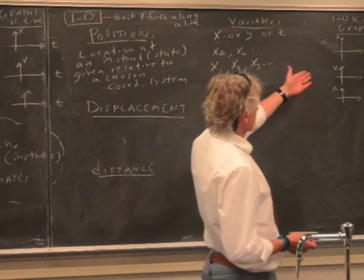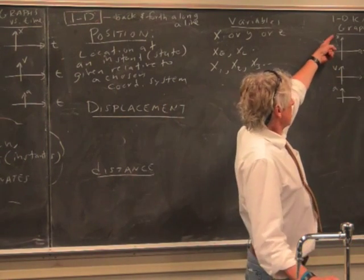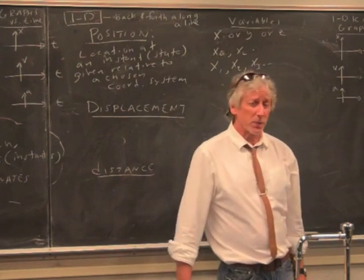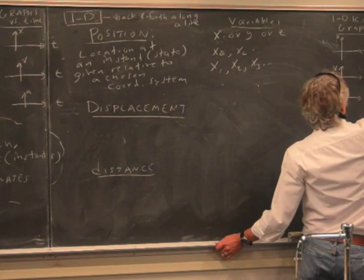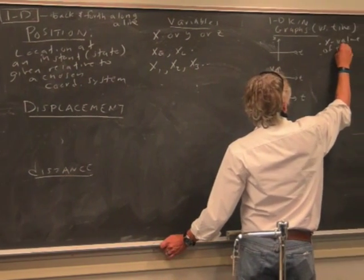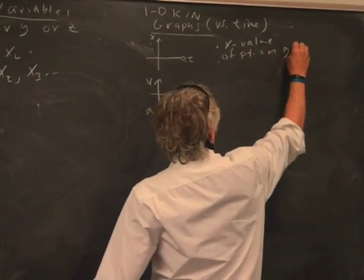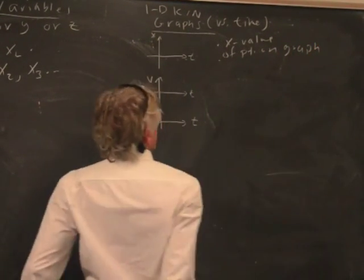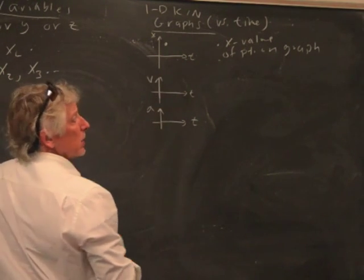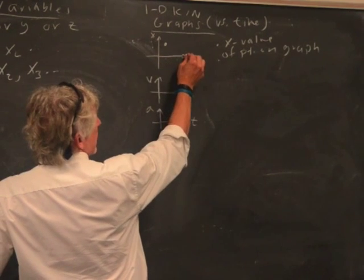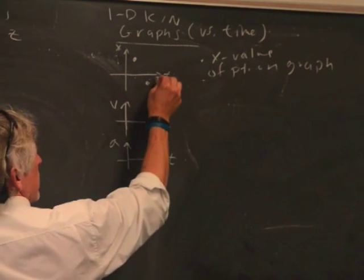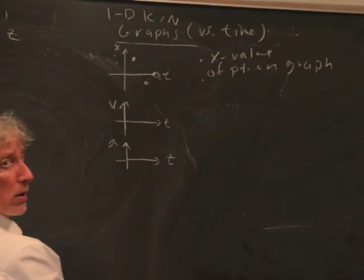Now I can look at this on graphs. There's position versus time graph. And how do I find the position? Well, it's the x value of a point on the graph. Easy enough. So here, I have a positive position. Maybe a time later, this is time, a time later I have a negative position. A time later I have a zero position.